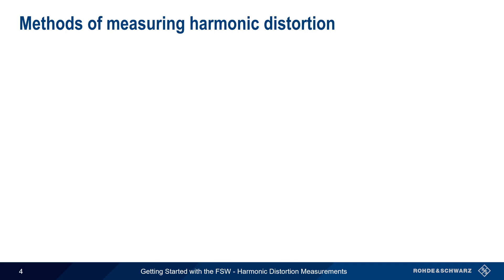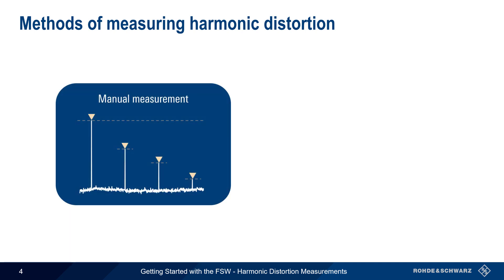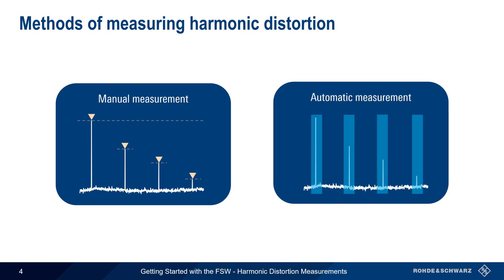There are two ways of measuring harmonic distortion on the FSW. The first is measuring the harmonics manually using markers. The second is using the FSW's automatic harmonic measurement function. Let's start by explaining the manual process.